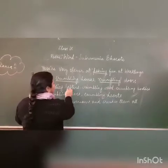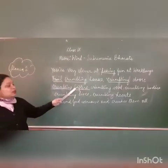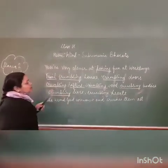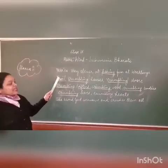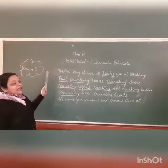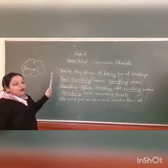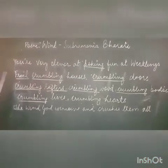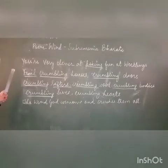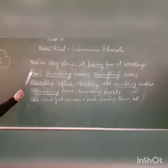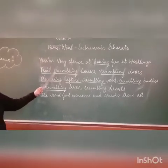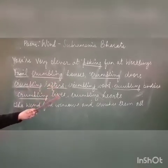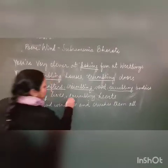Crumbling bodies, crumbling lights. So what is the poet trying to say here? The entire poem is a metaphor for adversities in life. The wind only disturbs the weak links — it makes fun of them and ridicules them by impacting crumbling houses, crumbling doors, crumbling rafters, crumbling wood, crumbling bodies, crumbling lights, and crumbling hearts.